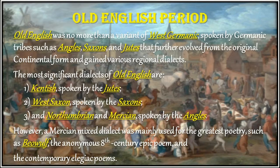Old English was no more than a variant of West Germanic, spoken by Germanic tribes such as Angles, Saxons, and Jutes, that further evolved from the original continental form and gained various regional dialects. The most significant dialects of Old English are: 1. Kentish, spoken by the Jutes. 2. West Saxon, spoken by the Saxons.